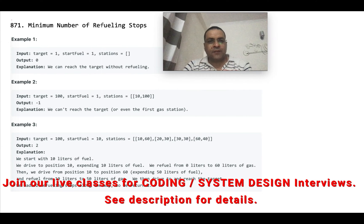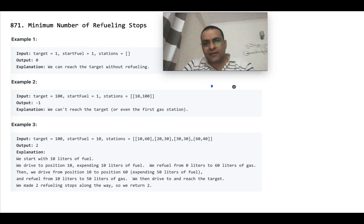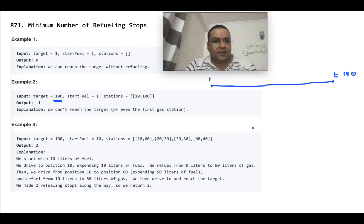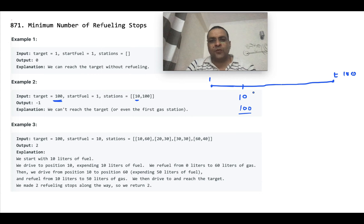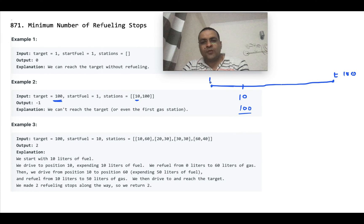You have a car with a very big tank and you are traveling in a linear line. The next filling station is at position 10, and this fuel station has 100 liters of fuel, which can take you 100 kilometers — so the mileage is one liter per kilometer. Your tank capacity is infinite, so you can put as much fuel as you want. With a starting fuel equal to one, you will never be able to reach the target, since you can only move one kilometer.